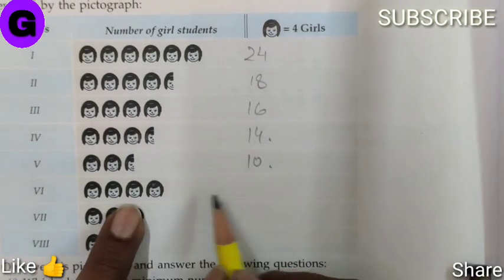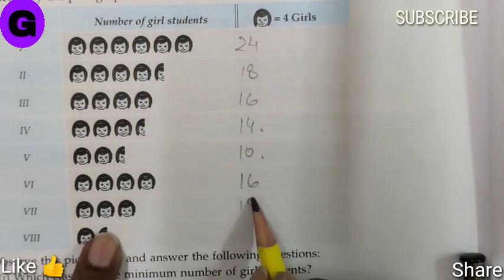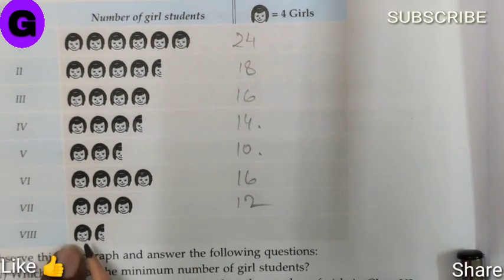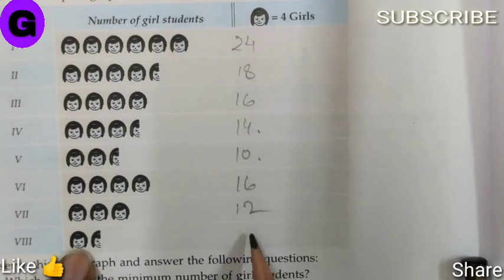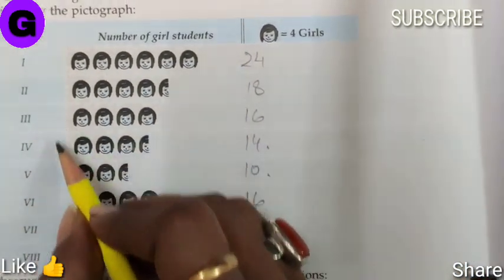Class 6 has 4 faces, so 16 girls. Class 7 has 3 faces, 12 girls. Class 8 has 1 and a half faces, 4 plus 2 equals 6. These are the numbers of girl students in each class.